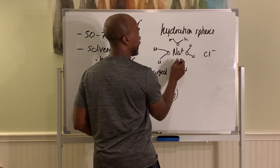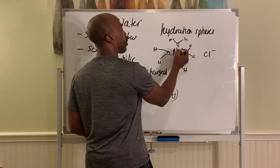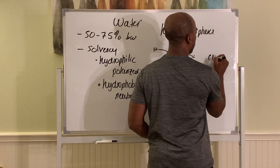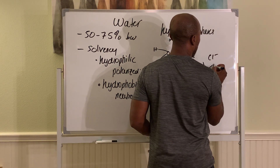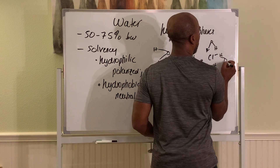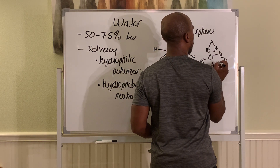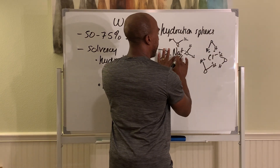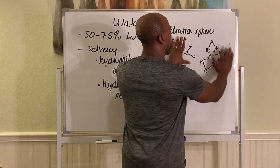The negatively charged oxygens will surround the positively charged sodium ion. For the chloride ion, water will orient differently — now the positive H's will surround the negatively charged Cl−. That's how you prevent the Na+ from re-associating with the Cl−, because they're trapped by spheres of water molecules around them.